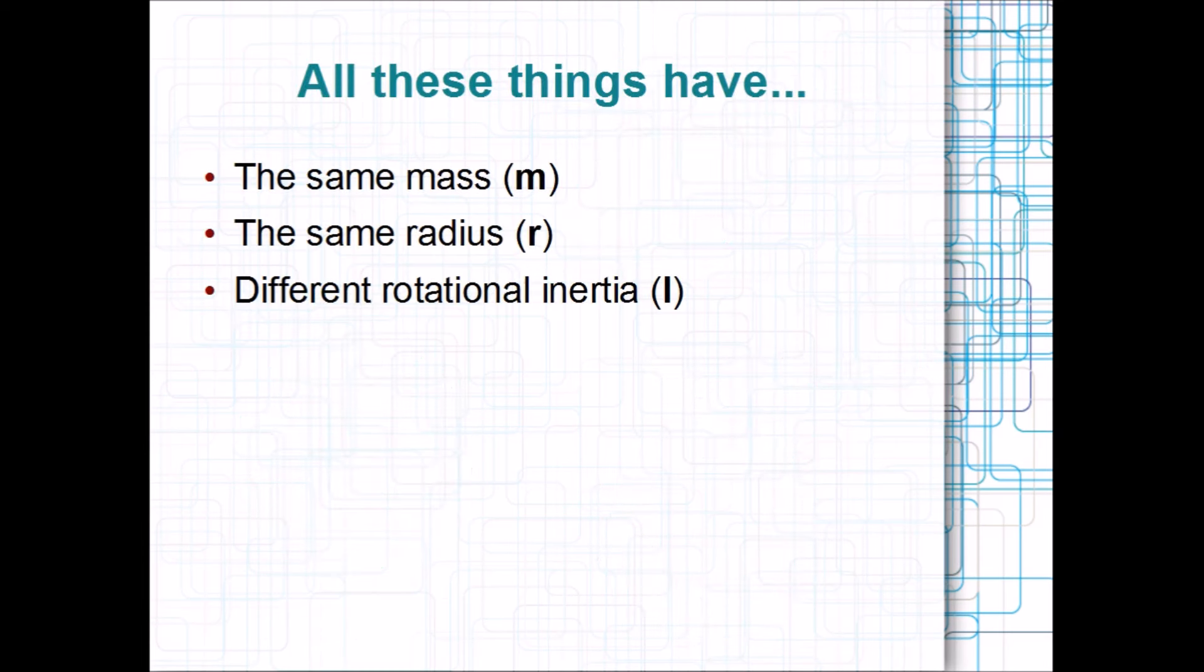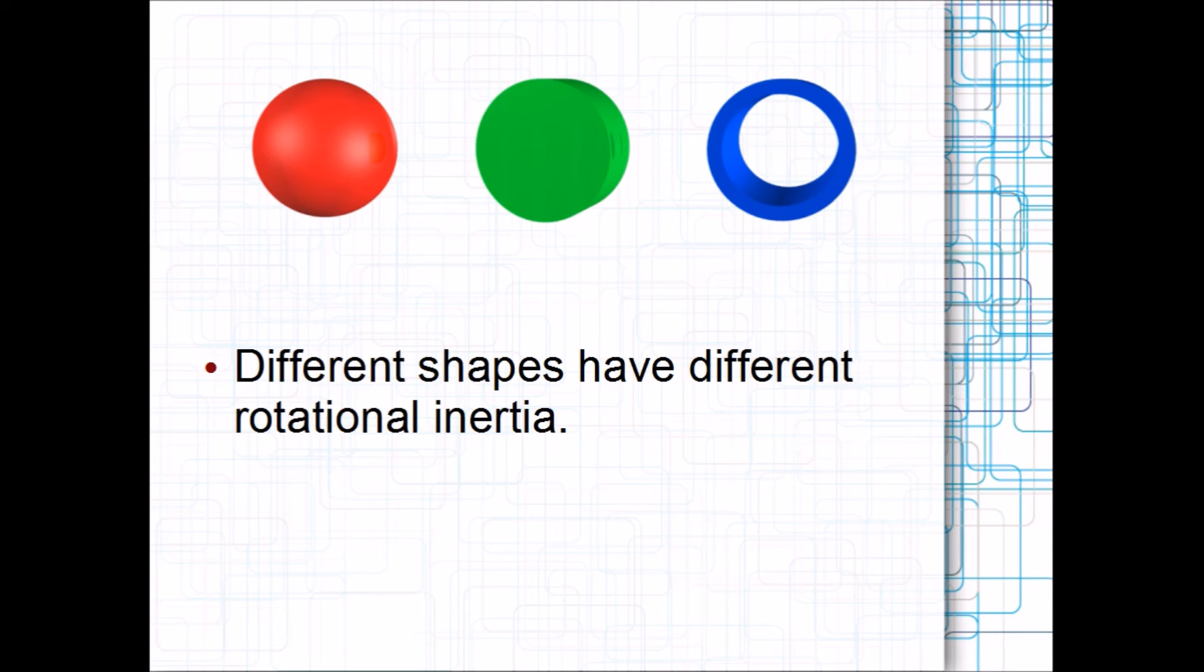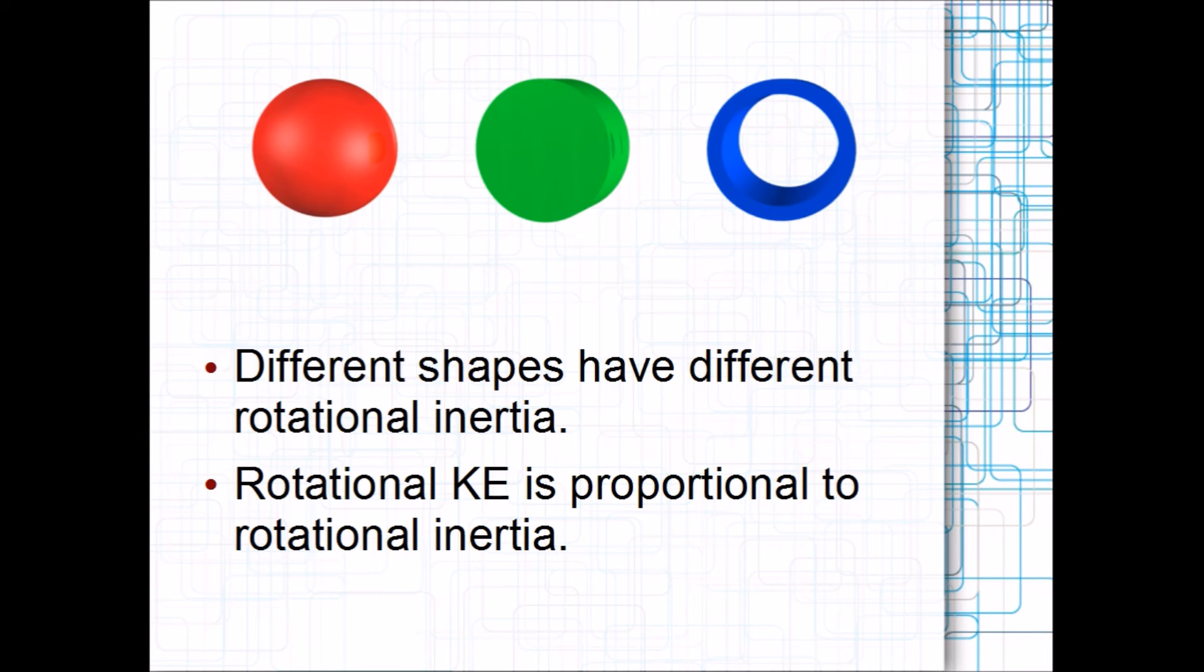Suppose all these things have the same mass and the same radius of rotation. However, they don't have the same rotational inertia. That means they respond differently to a torque causing an angular acceleration. Different shapes create different mass distributions, even if the objects have the same amount of mass. That's why they have different inertia. The rotational kinetic energy of a body is proportional to this inertia, and more rotational energy means it rolls faster.